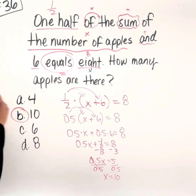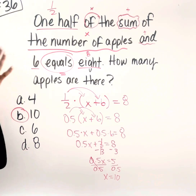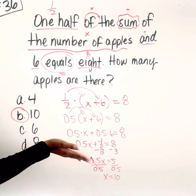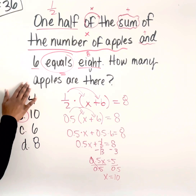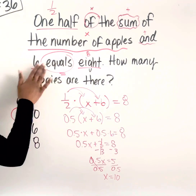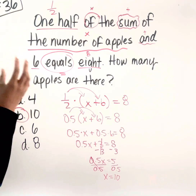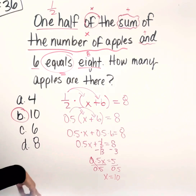So the correct answer is going to be B. Again, this is a scenario where we had to combine two different skills. The first thing was to translate the sentence into the actual equation. Then from there, we had to solve — and we knew to solve because it asks 'how many apples are there?' If it was just translating, it would have stopped at the first sentence. Make sure you can recognize when you need to combine those skills.